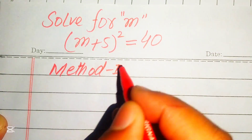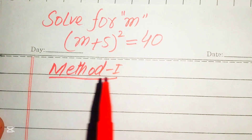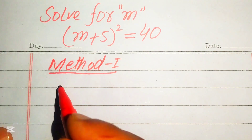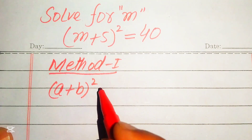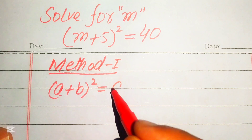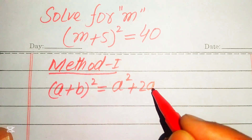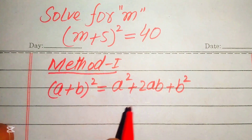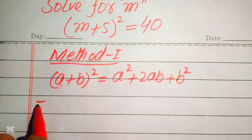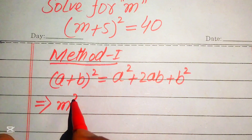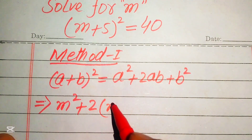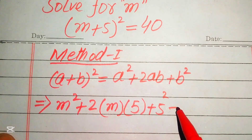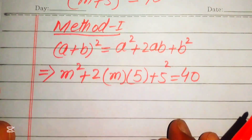For method one, we need to apply the algebraic formula to the left-hand side to find the values of m. The algebraic formula we apply is: (a + b)² = a² + 2ab + b². Applying this to the left-hand side, where a = m and b = 5, we get m² + 2(m)(5) + 5².